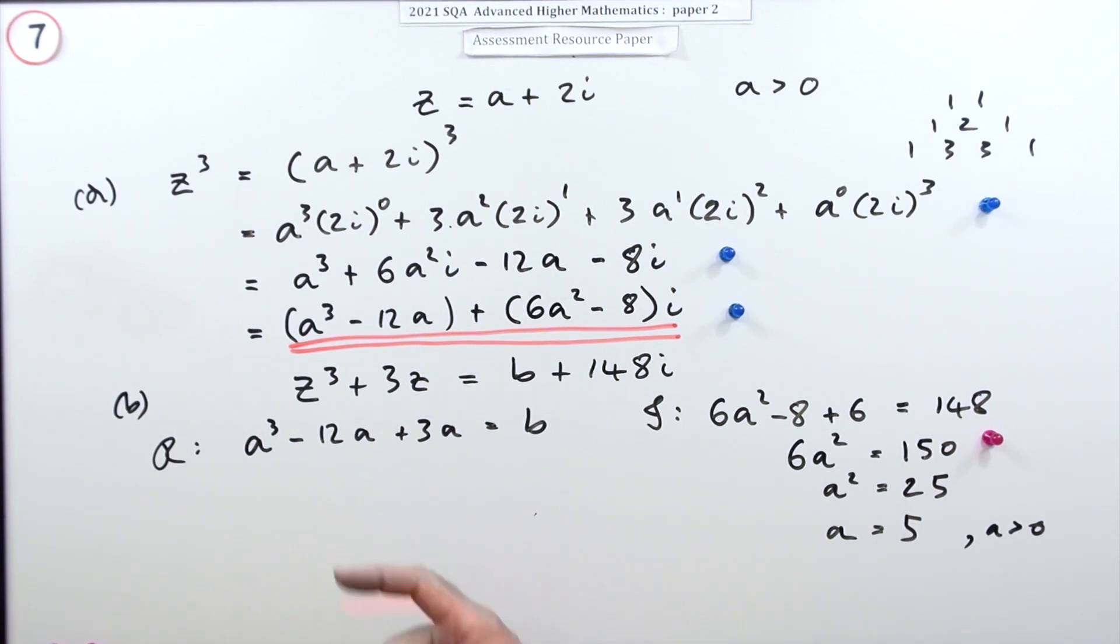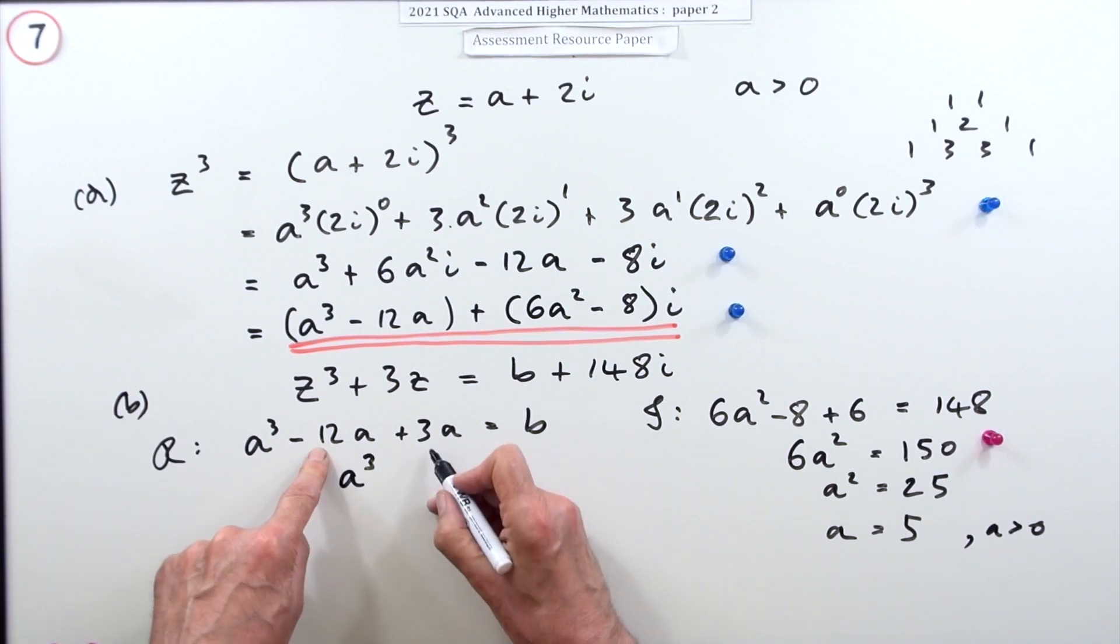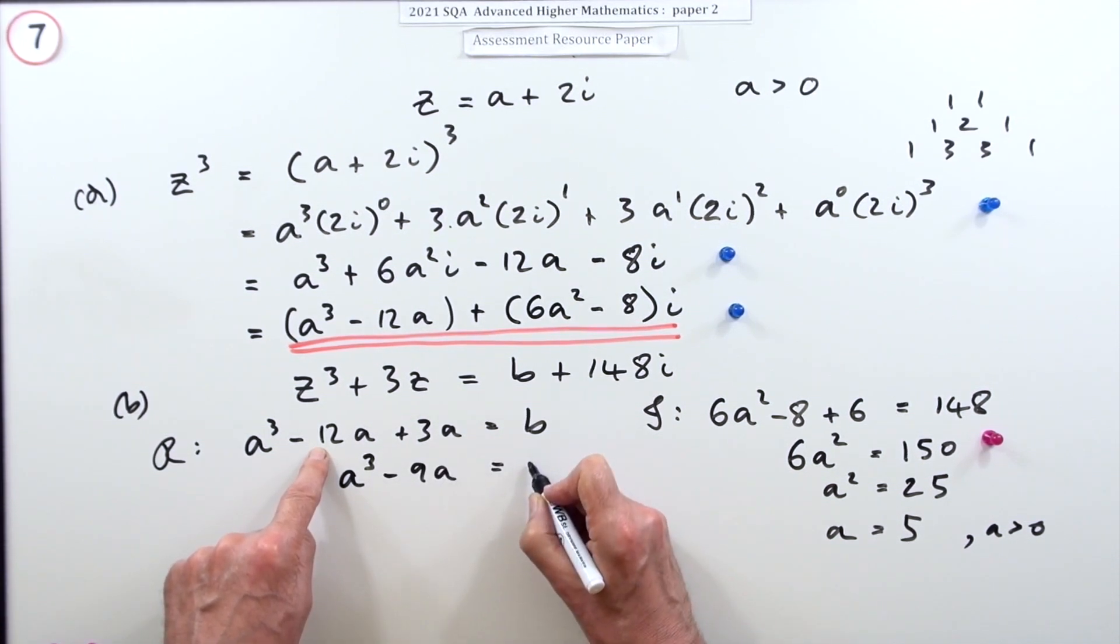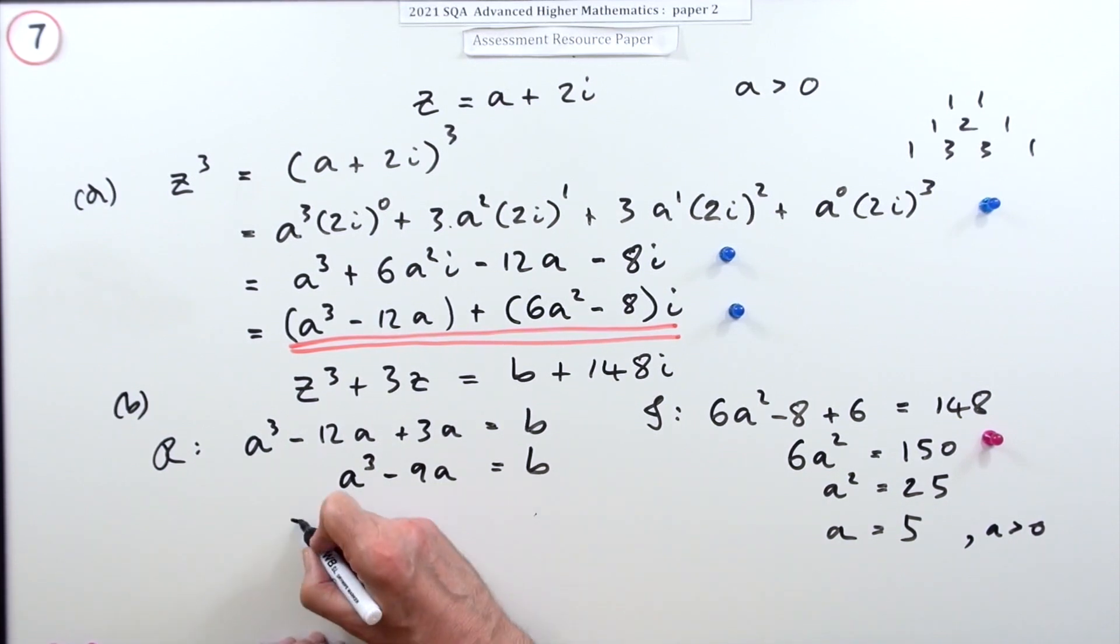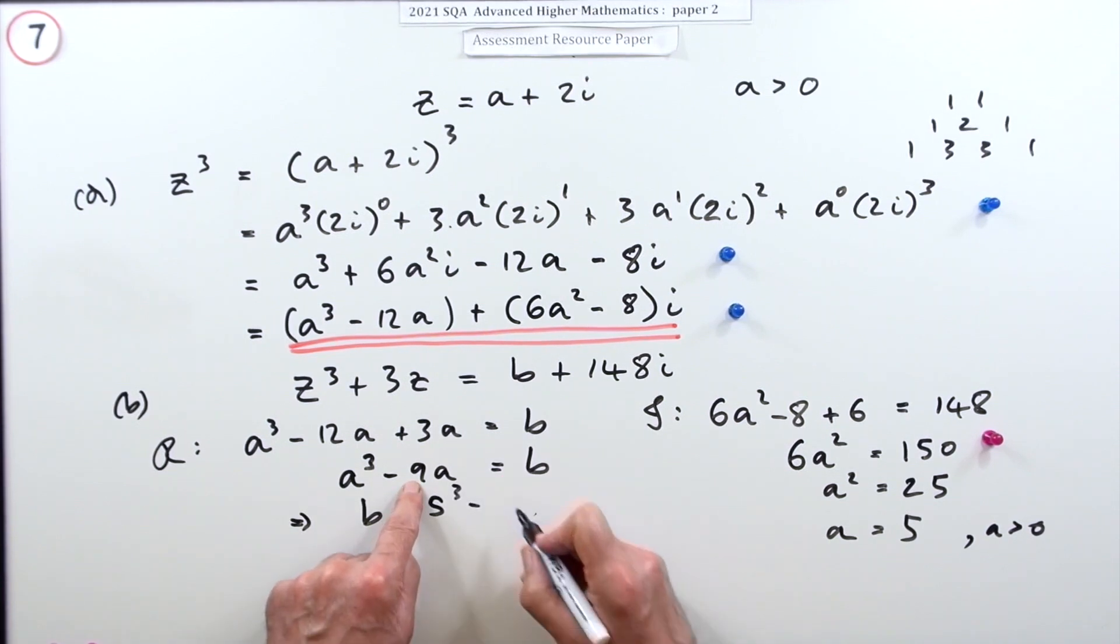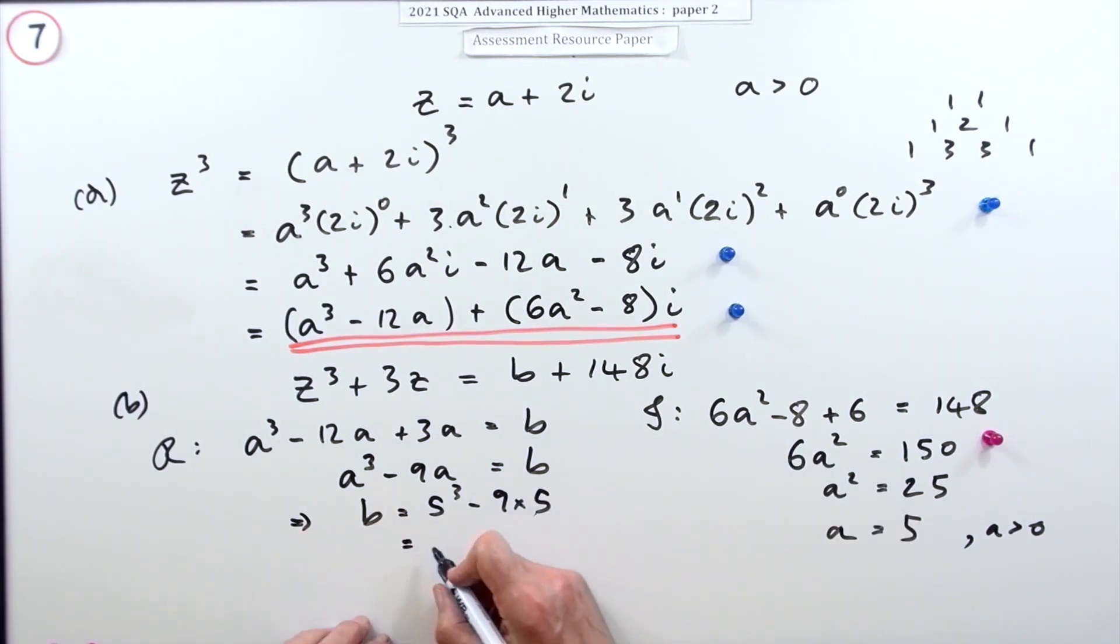Now you can put that into here because this says a cubed minus 9a equals b, so I can find b from that. That means b is going to be 5 cubed minus 9 times 5. That's 125 minus 45, so that's 80. We equate the real parts, and then the final mark was for getting the two answers.